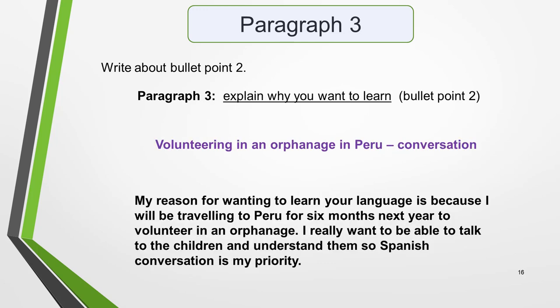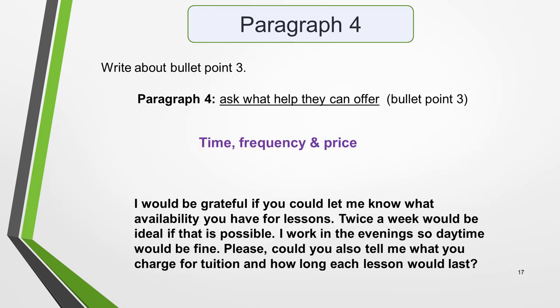The third paragraph should cover the second bullet point, which is to explain why you want to learn. My idea for this is that I want to volunteer in an orphanage in Peru and be able to engage in conversation with the children. You could write: 'My reason for wanting to learn your language is because I will be travelling to Peru for six months next year to volunteer in an orphanage. I really want to be able to talk to the children and understand them, so Spanish conversation is my priority.' Paragraph 4 addresses the third bullet point — to ask what help they can offer. My idea is to ask about time, frequency, and price of lessons.